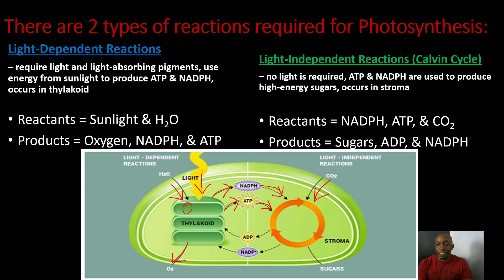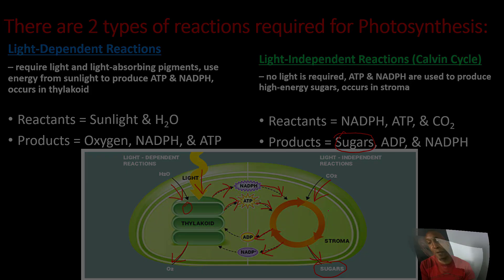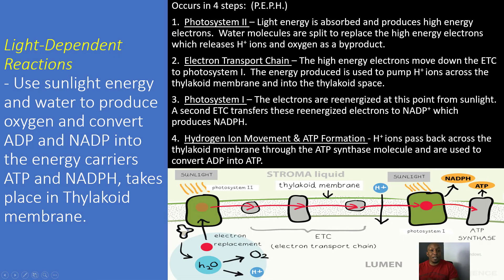Our primary product produced is our sugars. The ADP and the NADP+ are actually recycled by this process so they can be used all over again. As an overview, the light-dependent reactions use sunlight energy and water to produce oxygen, and convert ADP and NADP+ into the energy carriers ATP and NADPH. This takes place in the thylakoid membrane.